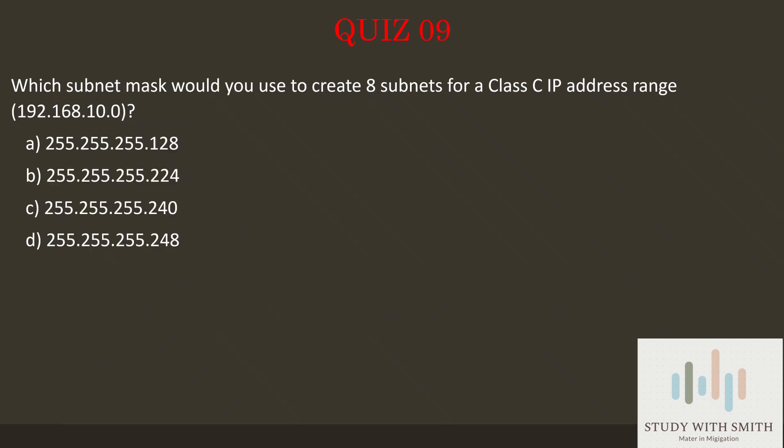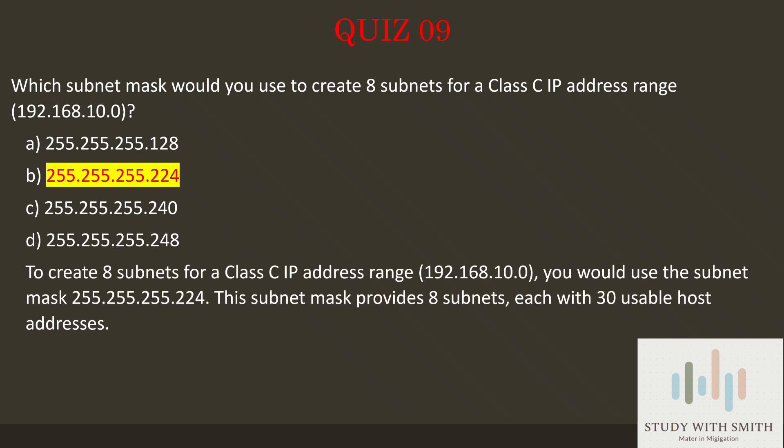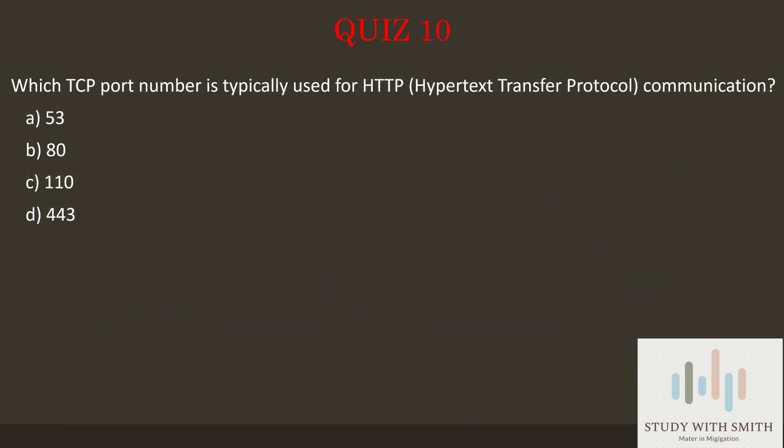Question 9: Which subnet mask would you use to create 8 subnets for a class C IP address range 192.168.10.0? Pause the video now to select the best answer. The answer is B — 255.255.255.224. To create 8 subnets for the class C IP address range 192.168.10.0, you would use the subnet mask 255.255.255.224. This subnet mask provides 8 subnets, each with 30 usable host addresses.